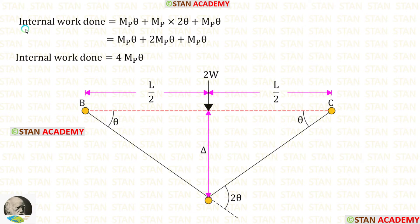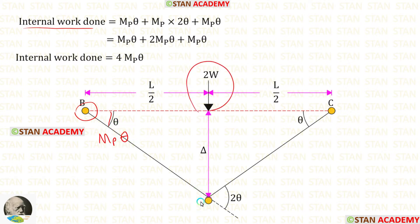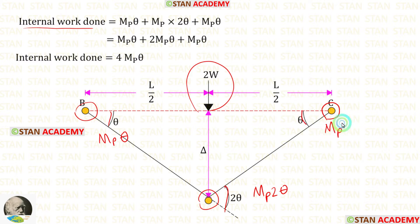Now let us find the internal work done. At point B we have a plastic hinge, so we multiply MB by angle theta. Under the point load we have a plastic hinge, so we multiply MB by angle 2 theta. At point C we have a plastic hinge, so we multiply MB by angle theta. Adding all of them, the internal work done equals 4 MB theta.